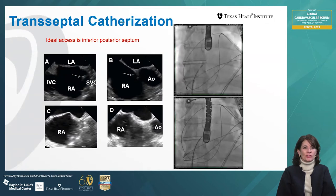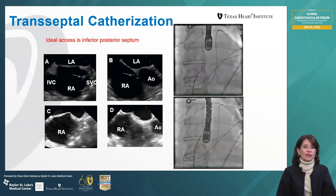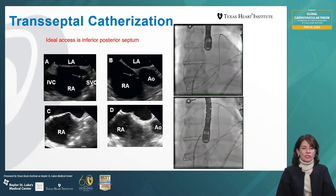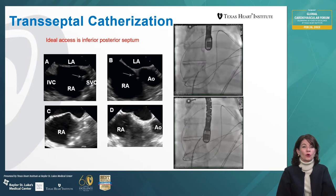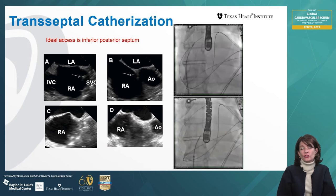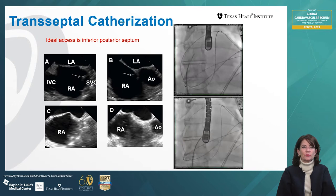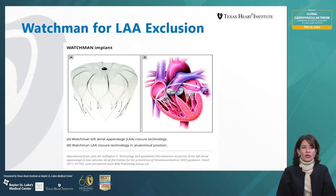Here you can see a biplane picture of the interatrial septum. We use this biplane imaging to help the interventionalist puncture the interatrial septum. The goal is to puncture both inferiorly and posteriorly so there will be plenty of room to maneuver into the left atrium to get the device across.